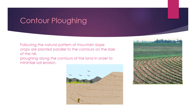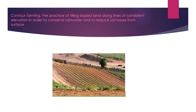Contour plowing is one of the wonderful practices of soil conservation. Following the natural pattern of the mountain slope, crops are planted parallel to the contours on the sides of the hill. It is plowing along the contours of the land in order to minimize soil erosion. It reduces the flow of water across the land surface, thus reducing erosion. It also increases soil retention, which encourages root development, specifically in mountainous areas of Pakistan.